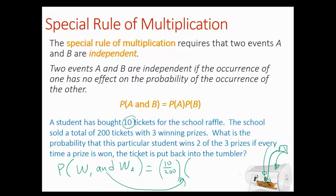Since they're putting the ticket back in, the student again has ten tickets out of 200 available to win the prize. So ten divided by 200 times ten divided by 200 is equal to 0.0025. That's the probability that the student wins two of the winning prizes out of three with the ten tickets that the person has.